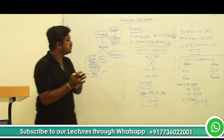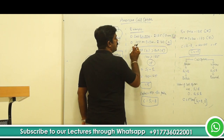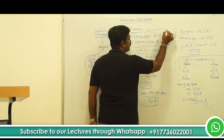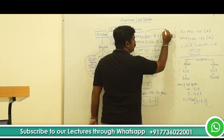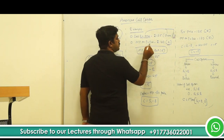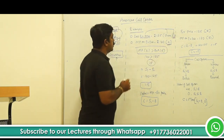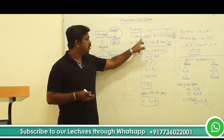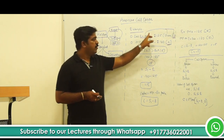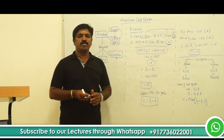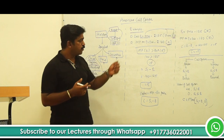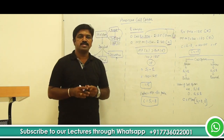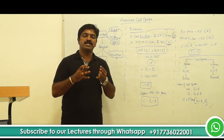Let us understand this with some numbers. The call exercise price is 125, and the market price on the exercise date is 140. Let us say we are talking with reference to a security that is a share. This exercise price, I am going to denote in short form as E, and this market price on exercise date, I am going to denote in short form as S1. If you are the owner of the call option, you can exercise your right to buy the share at 125 from your seller when the same is available in the market for 140 rupees. Obviously, you will exercise your right because if you want to purchase the same share from the market, you have to pay 140 rupees, but by exercising your right on the option, you can buy it for 125 rupees. It means there is a benefit or gain of 15 rupees.